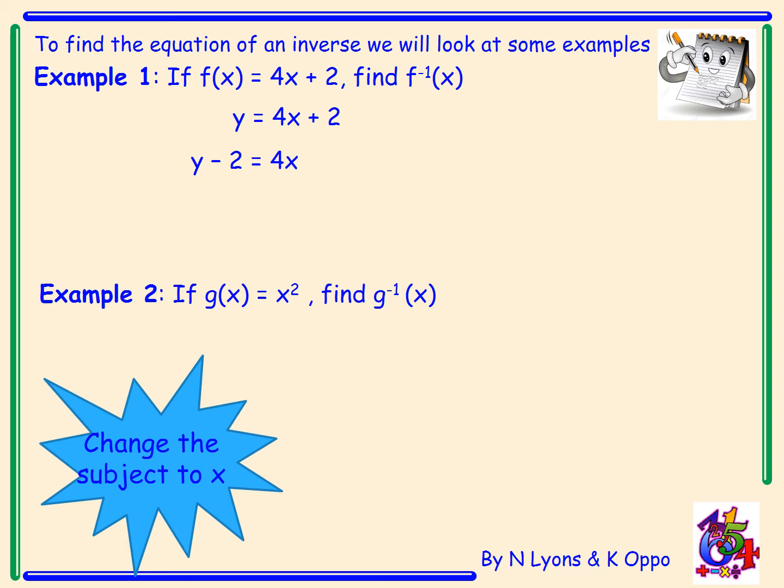We then have to move the 4 over — change the side, change what we are doing — we're going to divide by 4. Therefore x is y minus 2 over 4. The last step is we change x to f inverse, and y on the right-hand side becomes x. So our inverse function is x minus 2 over 4.